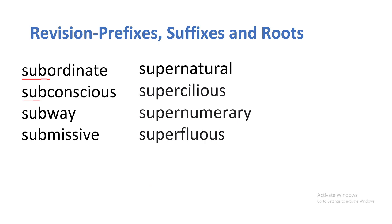Let's look at the prefix 'super'. Something that is beyond or above natural is supernatural. Supercilious describes someone who thinks they are above you — arrogant people. Supernumerary: 'numerary' is related to number, so supernumerary is beyond the needed number — for example, an extra finger is called a supernumerary finger. Superfluous: 'fluous' means to flow, super means above, so superfluous means more than what is required — for example, superfluous information means more data than you actually need.